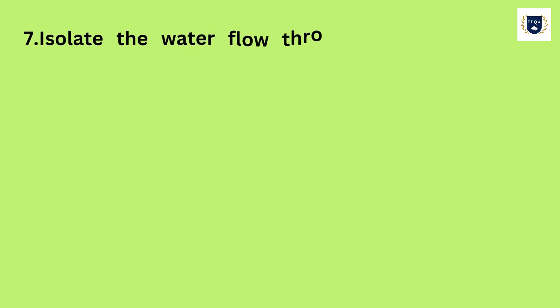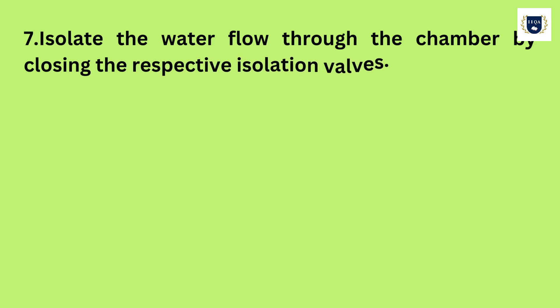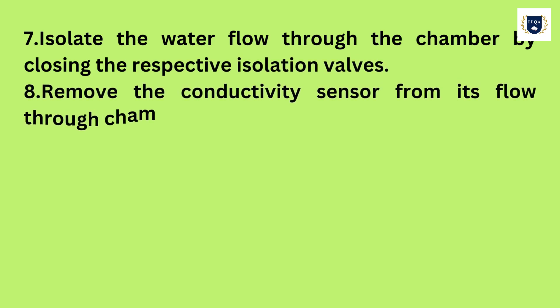7. Isolate the water flow through the chamber by closing the respective isolation valves. 8. Remove the conductivity sensor from its flow through chamber. 9. Take extra care not to damage its cable due to twisting.